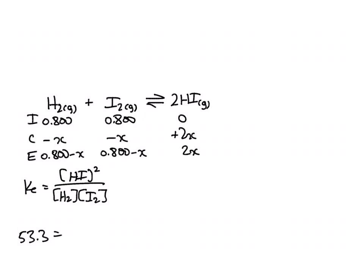That's equal to 2X squared over 0.800 minus X squared. And what I would do here is take the square root of both sides, solving for X here.